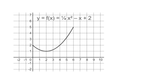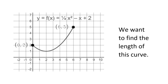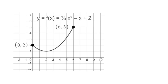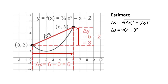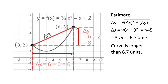Now consider the curve y equals f of x equals one-fourth x squared minus x plus 2 from x equals 0 to x equals 6. We want the arc length of this curve. If we think of the curve as a piece of string, we want to know how long the string would be if we could stretch it out straight. Whenever possible, we always start with an estimate. The simplest estimate comes from the straight line distance between the endpoints of the curve. The straight segment has delta x equal to 6 and delta y equal to 3, so the length of the diagonal segment is 3 square root 5, or about 6.7 units. A straight segment is always the shortest path between two points, so we know the curve is longer than 6.7 units.